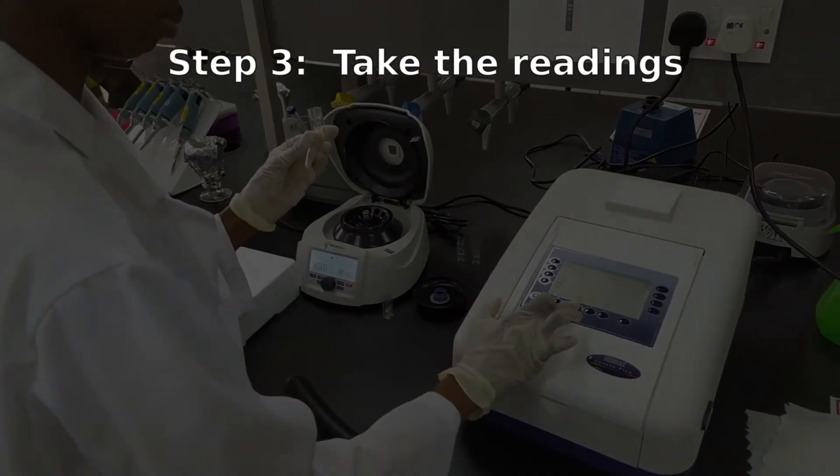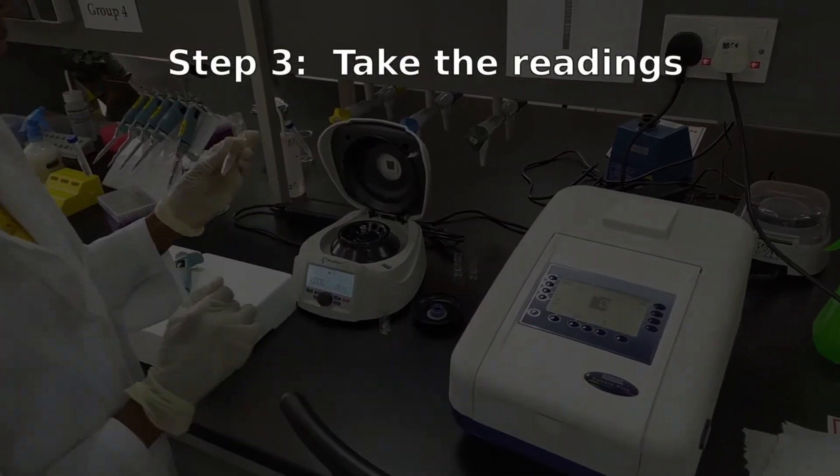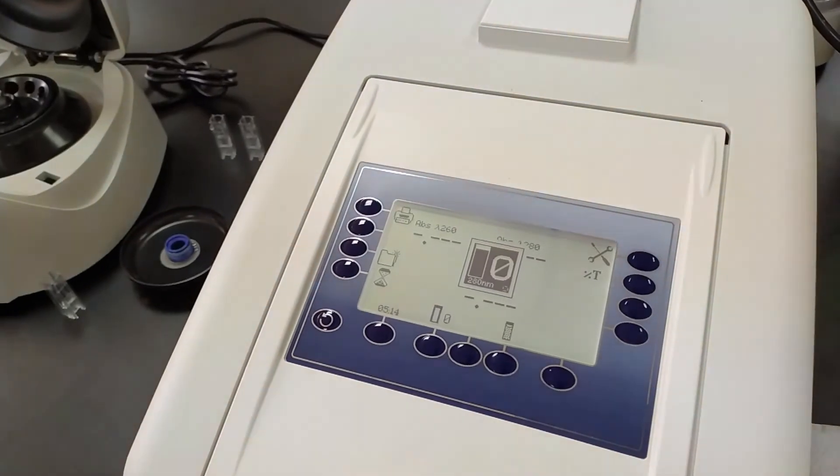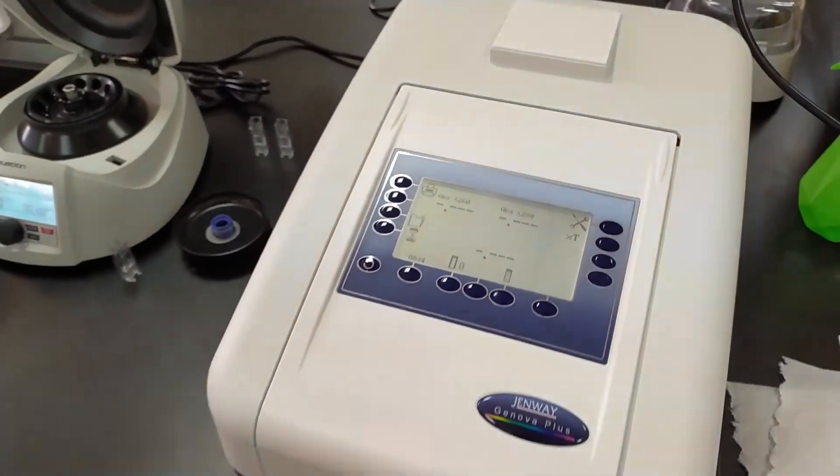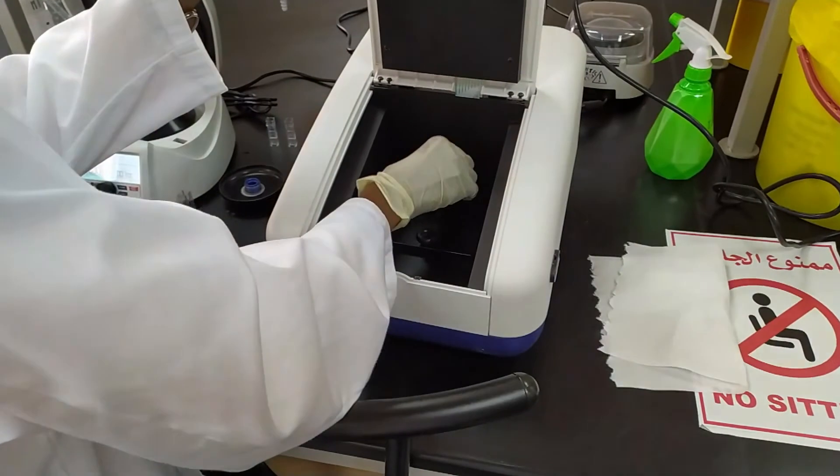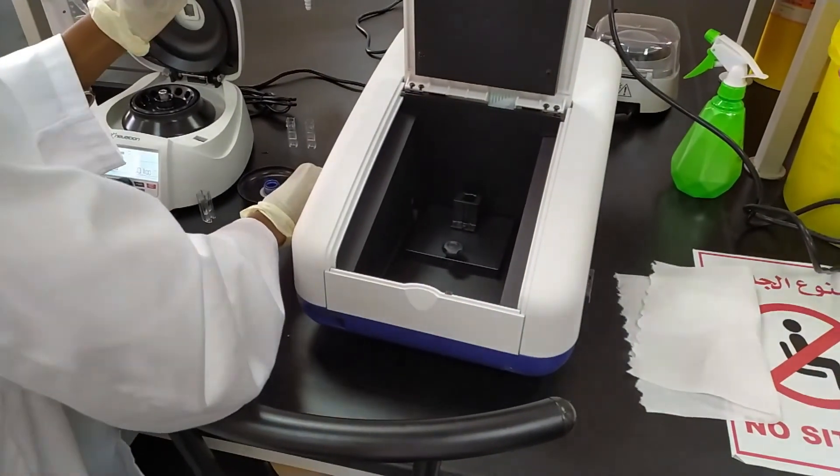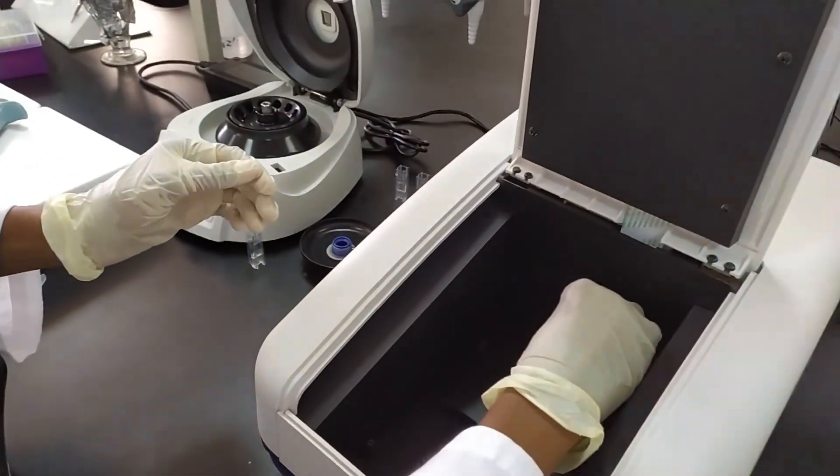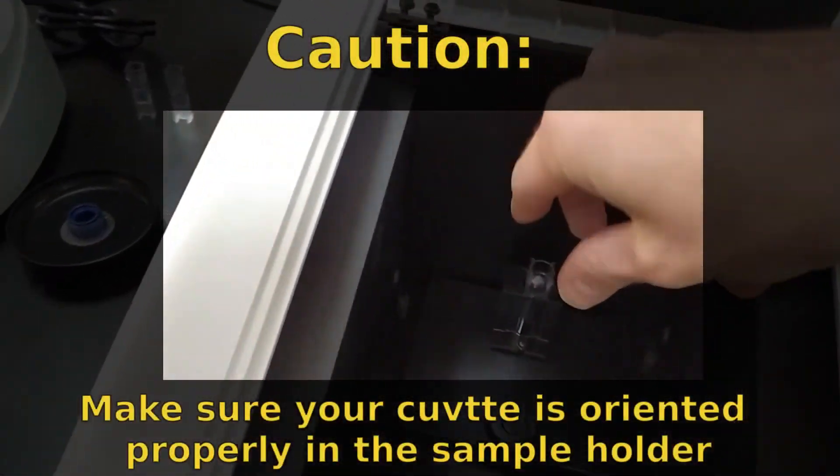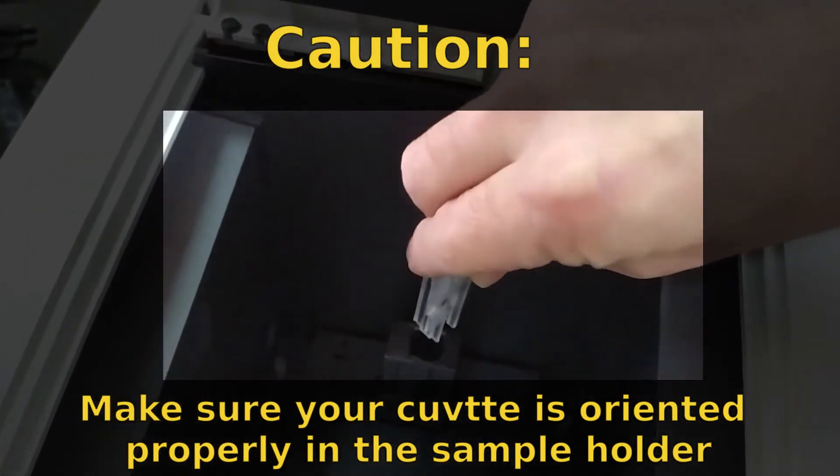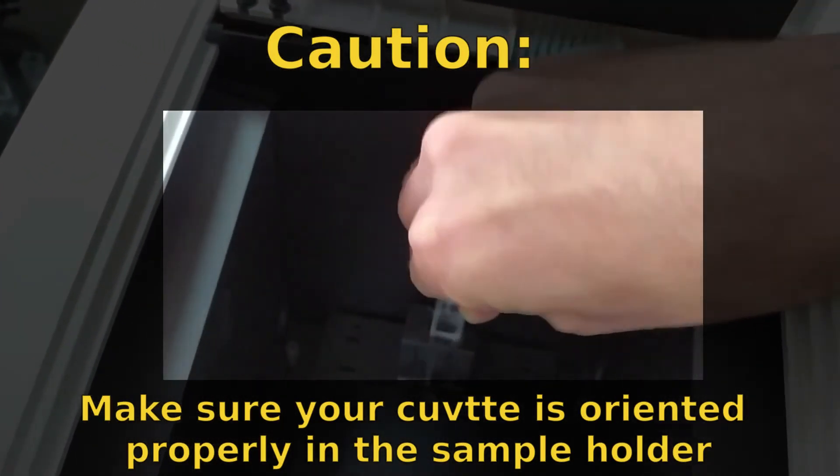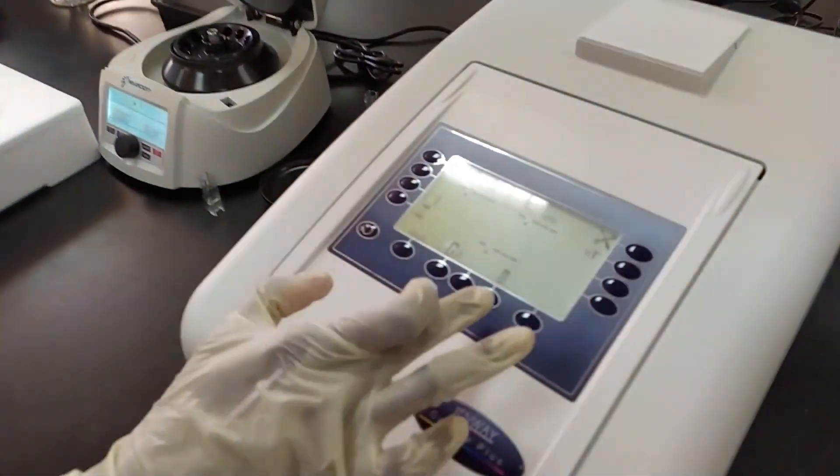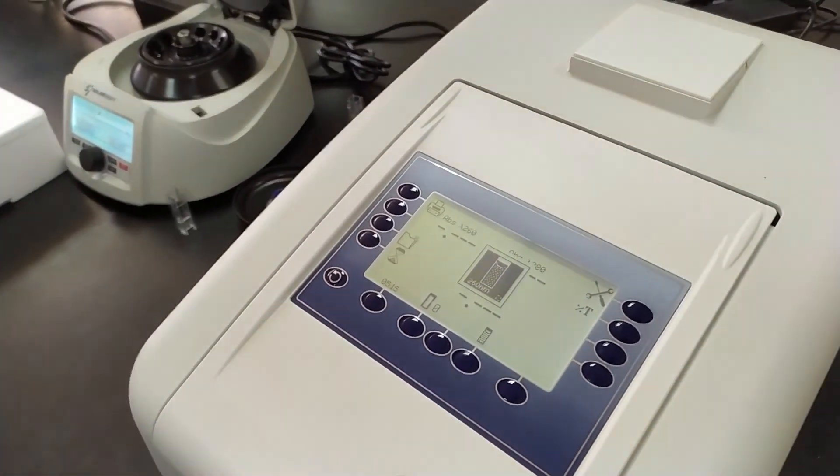So put in the blank, press the blank button on the spectrophotometer, wait for it to take its readings. Then take your blank out and put in your 100-fold dilution into the spectrophotometer. Press the read button and see what numbers it gives you.